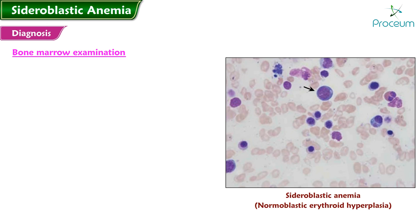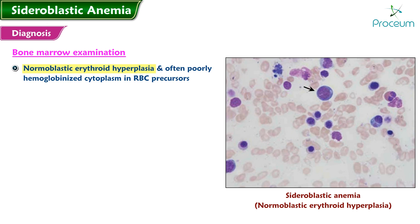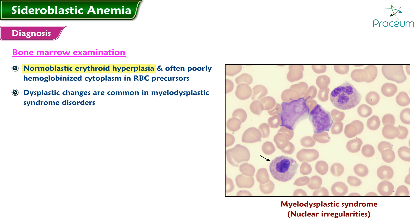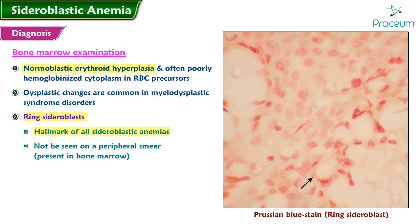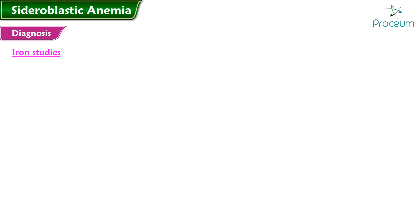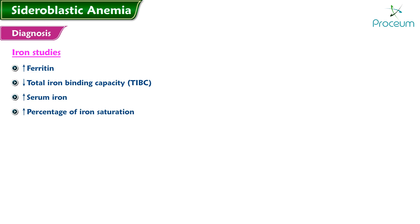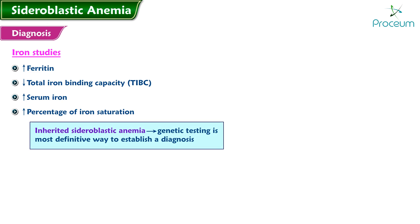Bone marrow examination: the bone marrow aspirate smear in sideroblastic anemia usually shows normoblastic erythroid hyperplasia and often poorly hemoglobinized cytoplasm in the RBC precursors. Dysplastic changes are common in myelodysplastic syndrome disorders. The Prussian blue stain reveals the presence of ring sideroblasts — the diagnostic hallmark of all sideroblastic anemias. It is very important to note that ring sideroblasts will not be seen on a peripheral smear, as they are only present in the bone marrow. Iron studies show increased ferritin, decreased total iron binding capacity, increased serum iron, and increased percentage of iron saturation. In cases of inherited sideroblastic anemia, genetic testing is the most definitive way to establish a diagnosis.